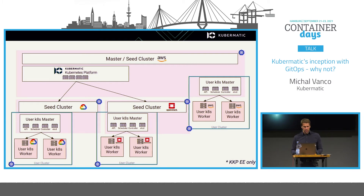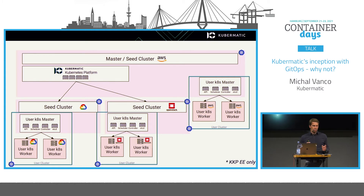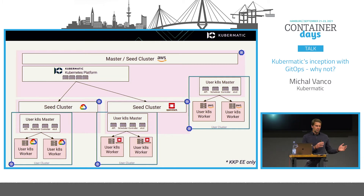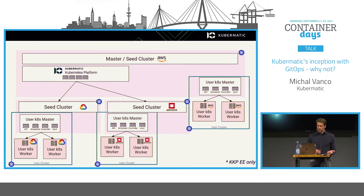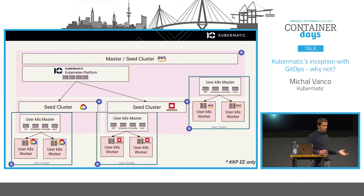However, this is only available with the Enterprise Edition. With the Enterprise Edition you can use the so-called multi-seed architecture, where control plane components are created in seed clusters that can be location-based or provider-based — for example AWS clusters in one seed, Google Cloud or OpenStack in another. If something breaks in Google Cloud, it only affects those clusters while others continue working independently.